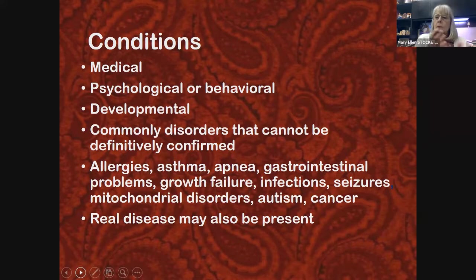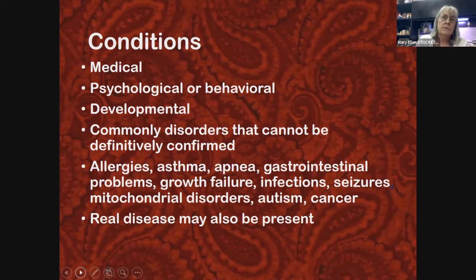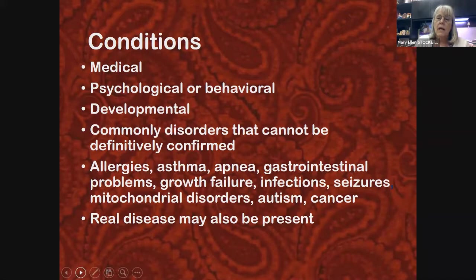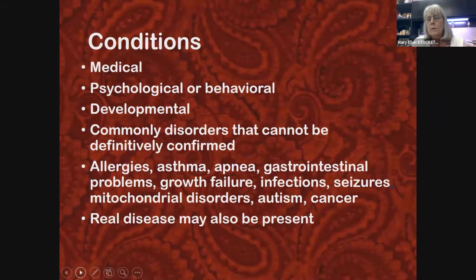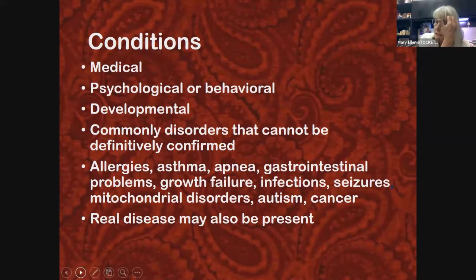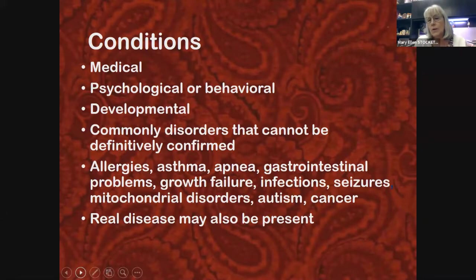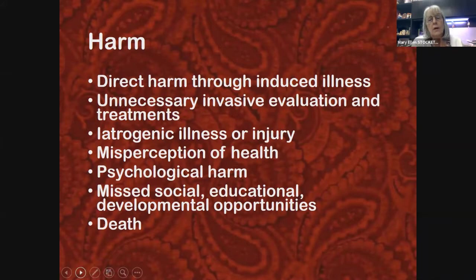There could also be real disease alongside the falsification. When I talk to people about a Munchausen case, they often say 'so the kid was completely healthy' — but that's not a requirement. There could be real disease that's either exaggerated, or real disease alongside fabricated conditions. I cared for a child with septo-optic dysplasia — she was blind and had growth hormone, steroid, and thyroid deficiencies — but her mother also falsely portrayed her as autistic, physically disabled, and having seizures.